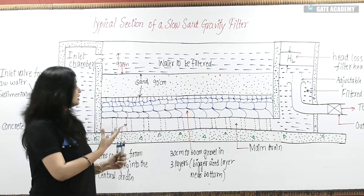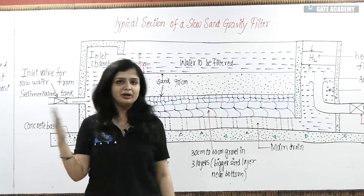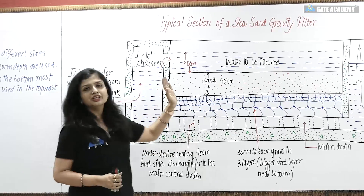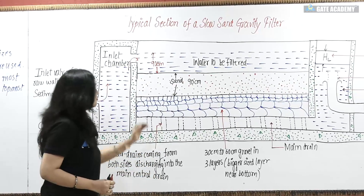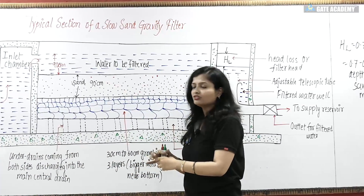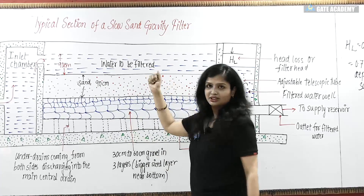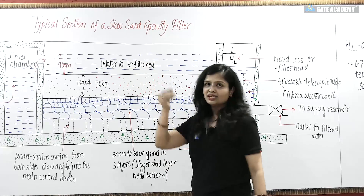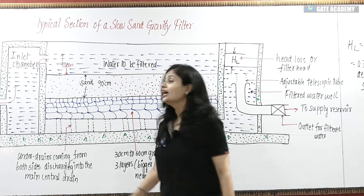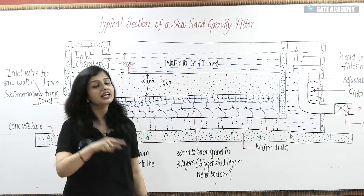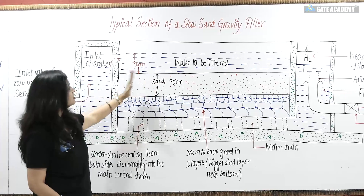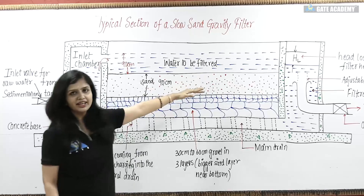For slow sand gravity filters, you don't need back washing. Instead, you remove 1.5 to 3 cm of the top sand layer. Since the finer sand particles are in the topmost layer, there will be more dirt particles and more impurities accumulated there. So you scrape and remove 1.5 to 3 cm of sand, and replace it with fresh finer sand.